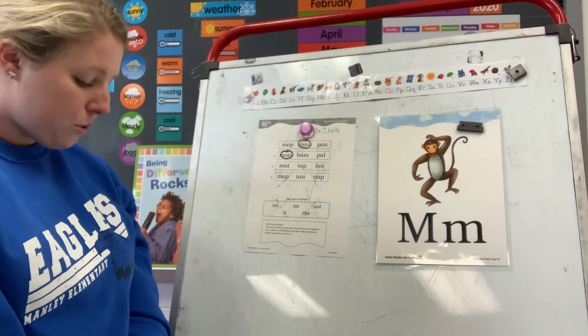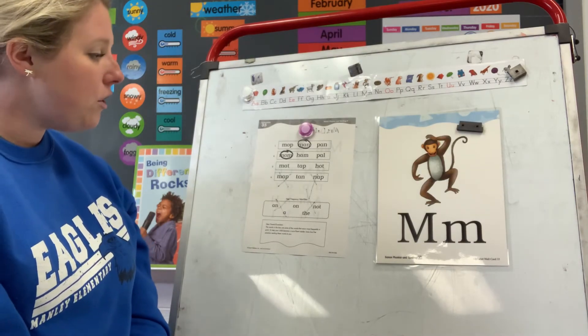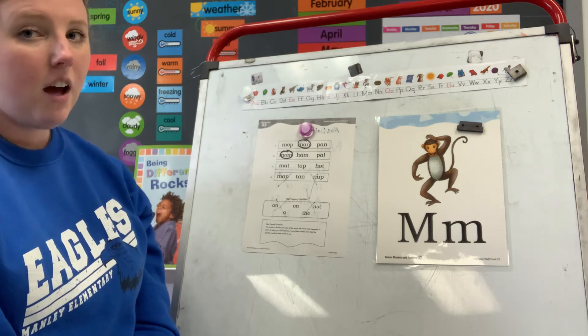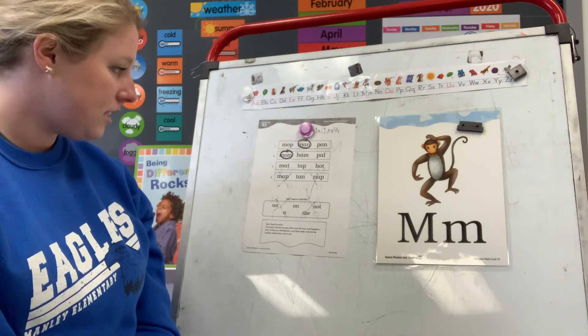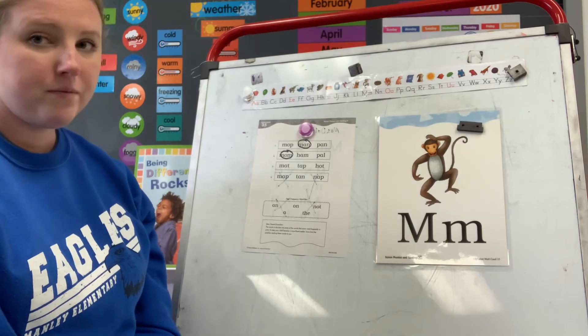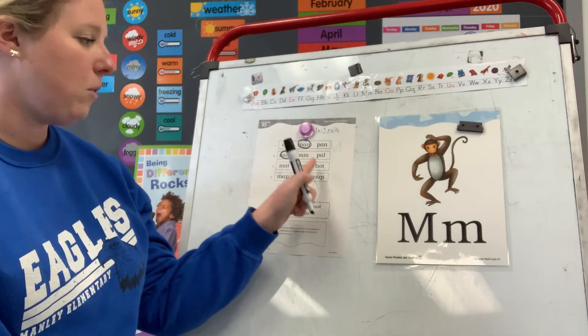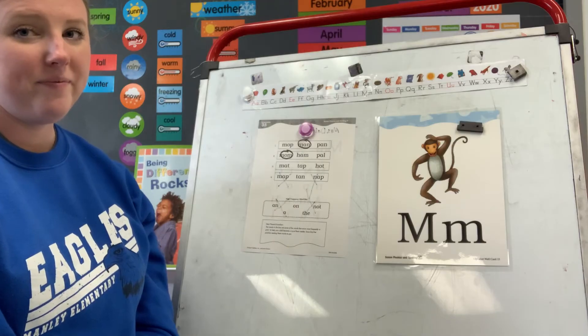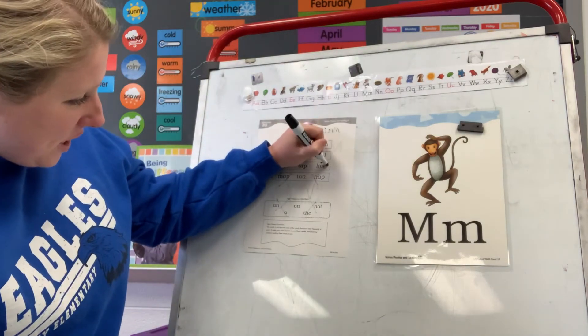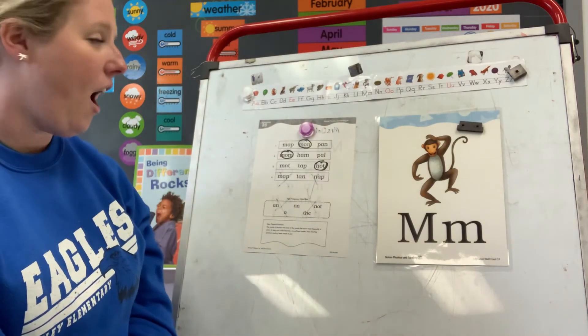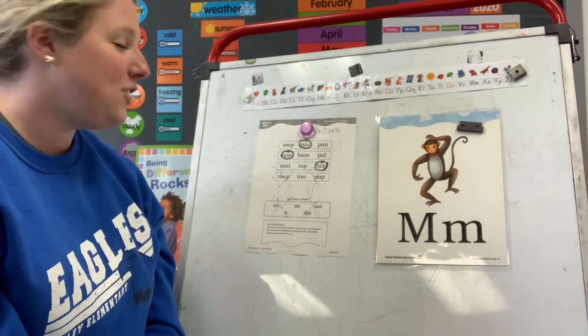Look at number three. Circle the word hot. H-o-t. Is it the first word, the second word, or the third word? The third, you should have circled the third word. H-o-t. Good job, friends.